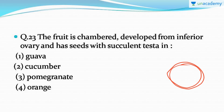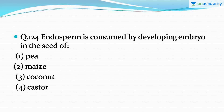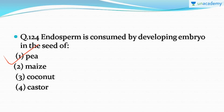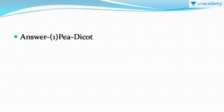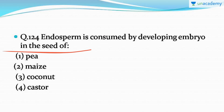Question number 24: endosperm is consumed by the developing embryo in the seed of — this question is very easy. The correct answer is option number one: pea. Pea is a dicot plant, and in dicot plants the endosperm is totally consumed by the developing embryo, whereas maize, coconut, and castor are monocots and hence their endosperm is retained.